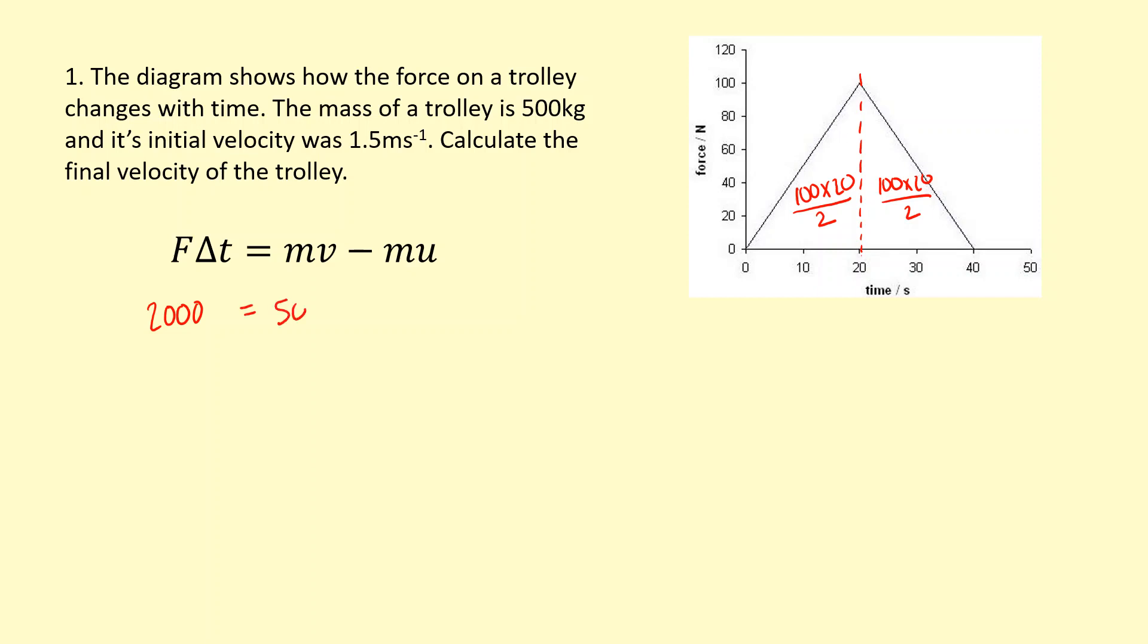My mass is 500. My final velocity, I don't know that yet. I've got 500 here, and my initial velocity was 1.5. So rearranging this, divided by 500, we get a final velocity of 5.5 meters per second.